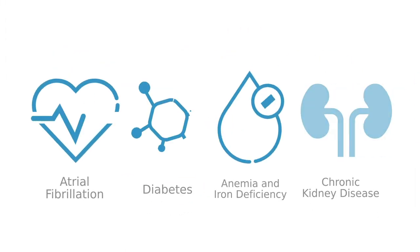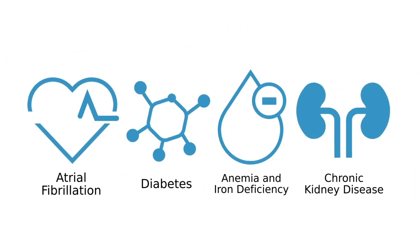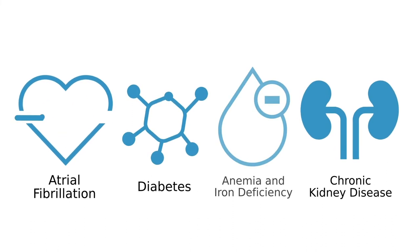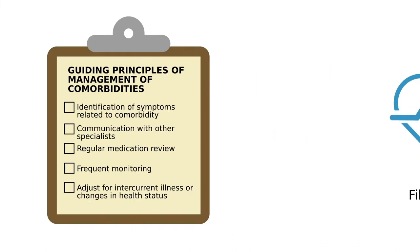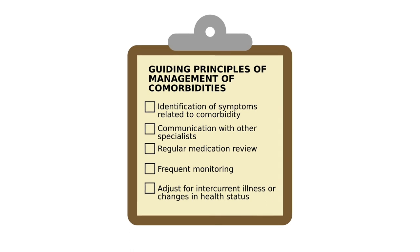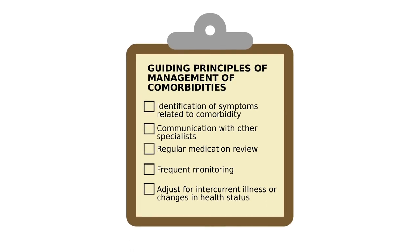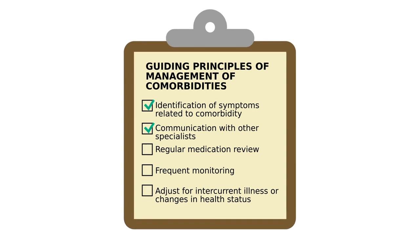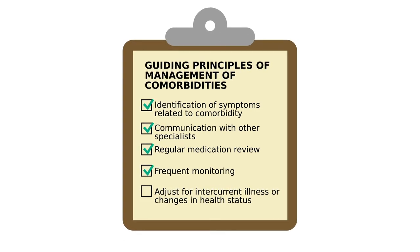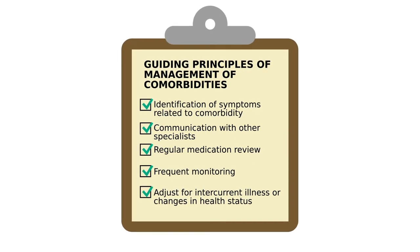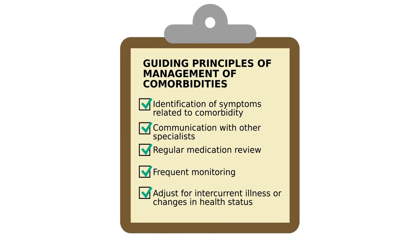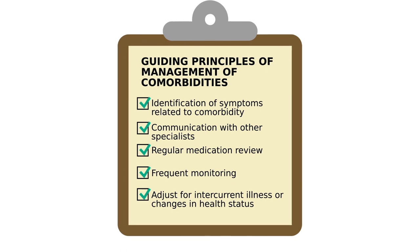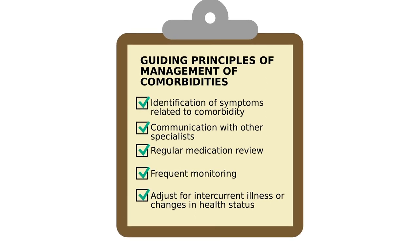Regardless of whether a patient with heart failure has comorbid atrial fibrillation, diabetes, anemia, and/or kidney disease, the general principles apply to patient management: identification of comorbidities, communication with other health care providers, regular follow-up and monitoring, and being flexible with respect to the treatment plan are all critical factors to the successful management of patients with heart failure and comorbidities.